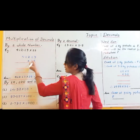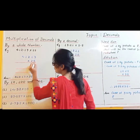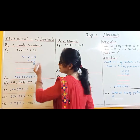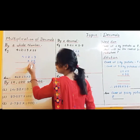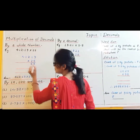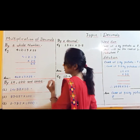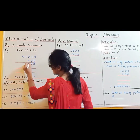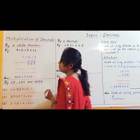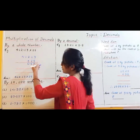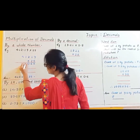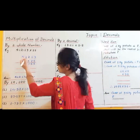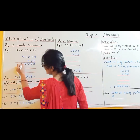5 threes are 15, carry 1. 5 ones are 5 plus 1 is 6. 5 twos are 10, carry 1. 5 ones are 5 plus 1 is 6. 5 fours are 20.